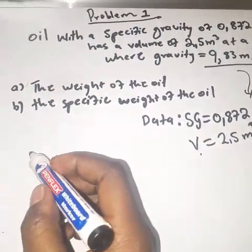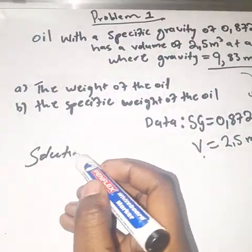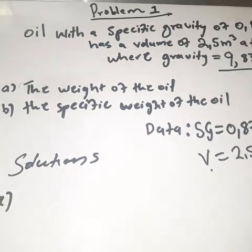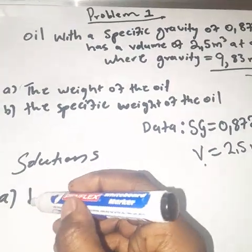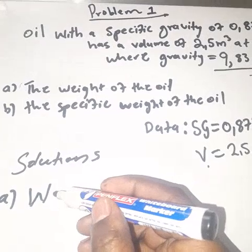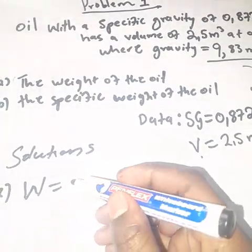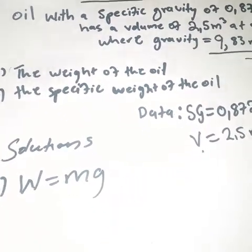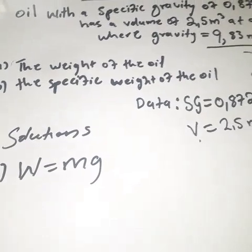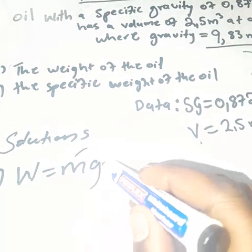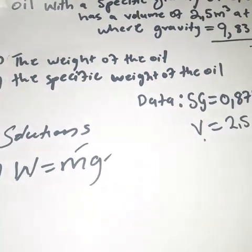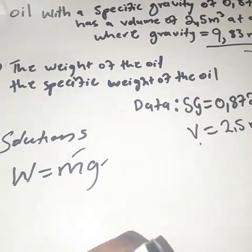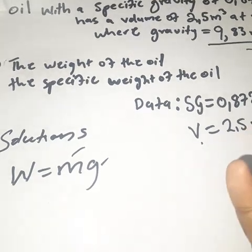For question A, let's write the solution. They want the weight. We know that weight W is equal to mg. Do we have mass m? No. Do we have g? Yes, we know it. But what are we given? We are given the volume.